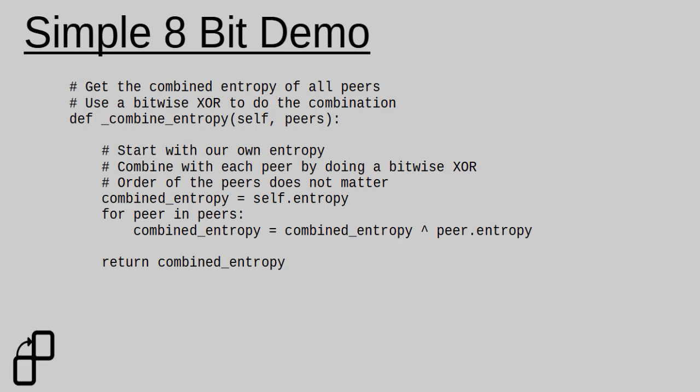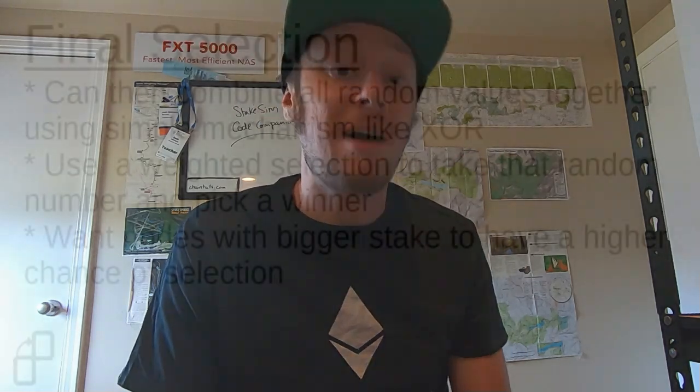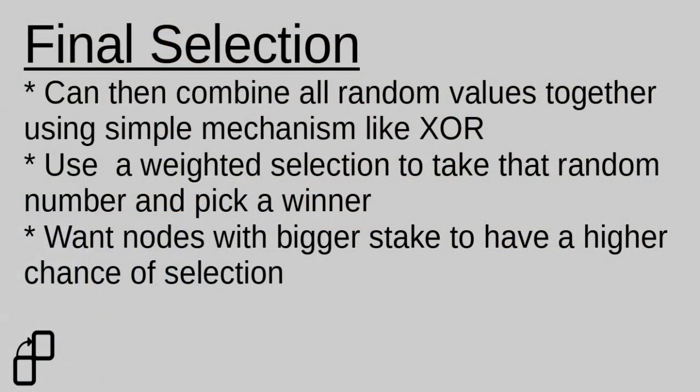Something else we want to do with proof-of-stake is reward those that stake a higher amount — and therefore would have a higher penalty if they do something wrong — with a greater chance of being selected as the block validator. So once we have our random number, we can use a weighted random selection algorithm to pick the actual winner.